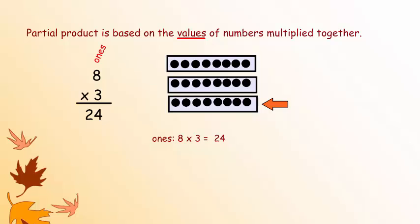Let's look at a simple problem: 8 times 3 equals 24. The 8 is in the ones place — this is the value of the ones place, which is 8. And we have three groups of eight, which means we have 24 altogether.